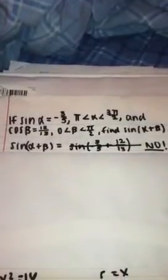Sine of alpha plus beta equals sine of negative 3 fifths plus 12 over 13? No. It's saying that the sine of alpha is negative 3 over 5 and cosine of beta is 12 over 13, so it's not plugged inside the equation, that's actually what it is. So we need to know what the equation is, which is sine of alpha times cosine beta plus cosine alpha sine beta.